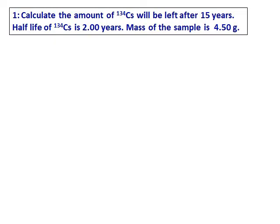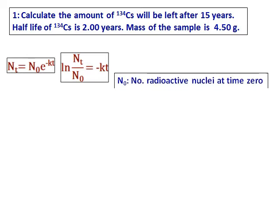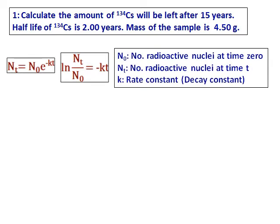Calculate the amount of CS-134 that will be left after 15 years. Half-life of CS-134 is given as 2 years and mass of the sample is 4.50 grams. The equation we will be using is Nt equals N0 e to the power minus kt, and in this case N0 is given as 4.50. We need to calculate Nt.